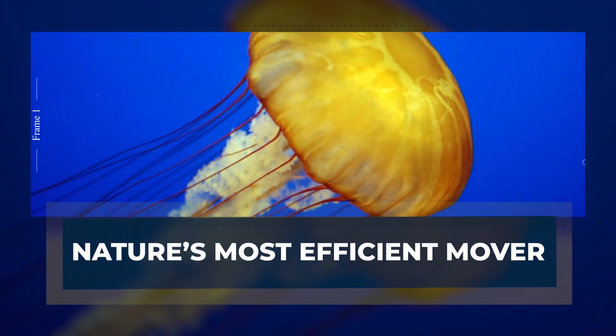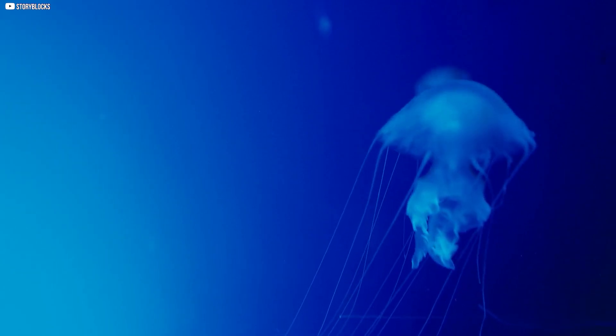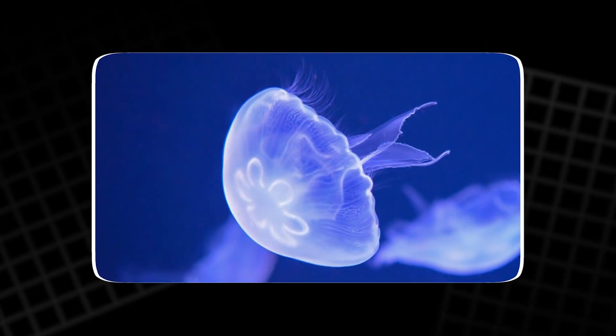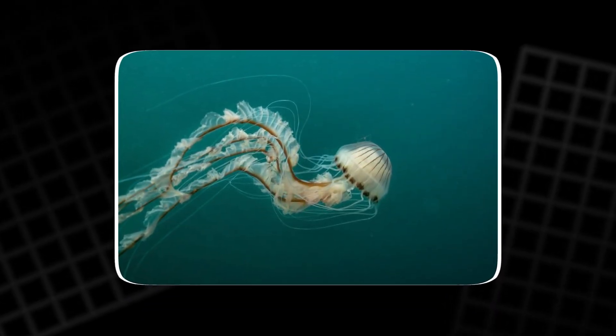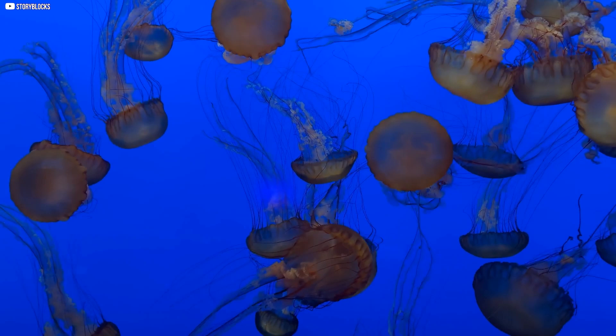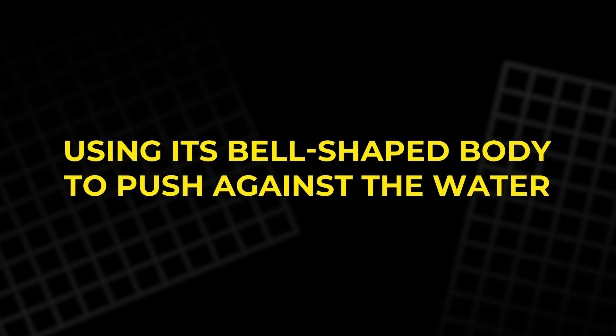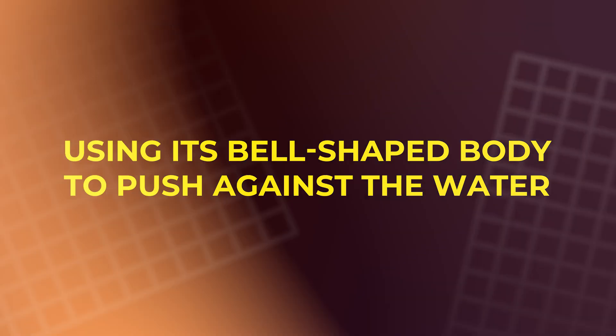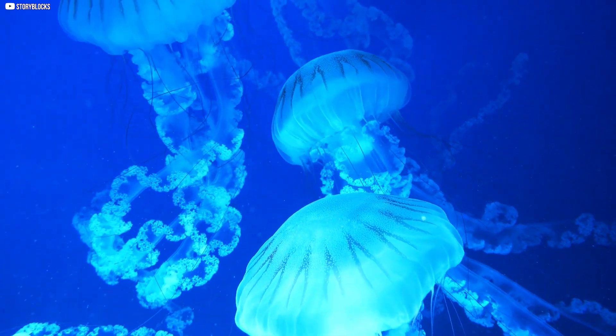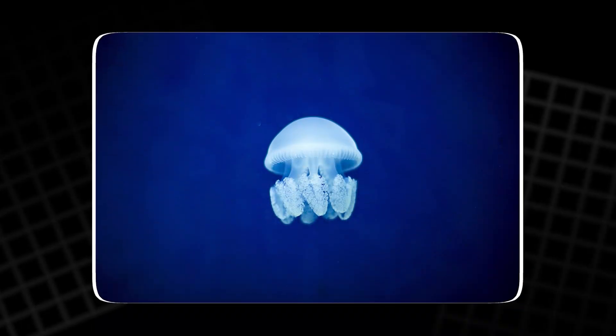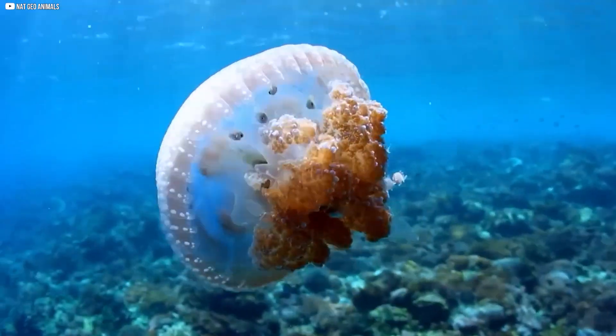Nature's most efficient mover. To understand how revolutionary jellyfish-inspired systems are, we need to look at the jellyfish itself. It doesn't swim like a fish or dart like a squid. It pulses. It contracts and relaxes, over and over, using its bell-shaped body to push against the water. Each pulse sends a vortex spinning away, like a smoke ring underwater. Then, as the bell resets, it draws water back in, creating a second vortex.